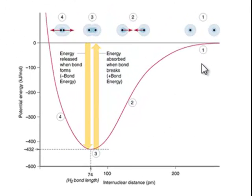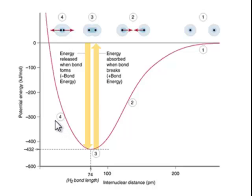Marked with number one, you have two individual atoms that have a high amount of potential energy. As those atoms get closer together at number two, the amount of potential energy drops. As the atoms get closer together yet, the potential energy drops even more. But if you try to push the atoms even closer, the amount of potential energy actually rises because now there are greater repulsive forces than attractive forces. So the point at the bottom of the graph, labeled with number three, represents the distance that has the minimum amount of potential energy.